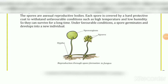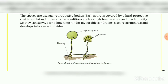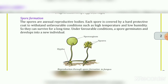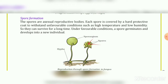We can see the figure showing reproduction through spore formation in fungus. In the figure you can see: what is called hypha, then what is called sporangium, and what is called spores.